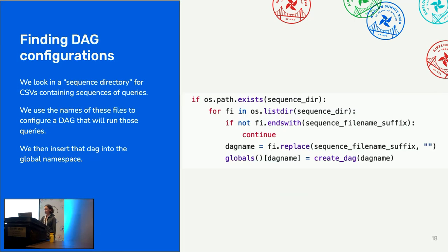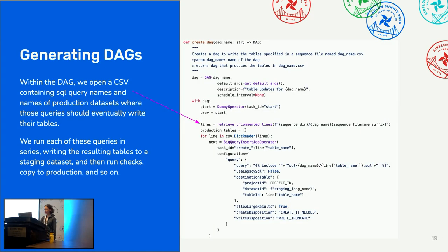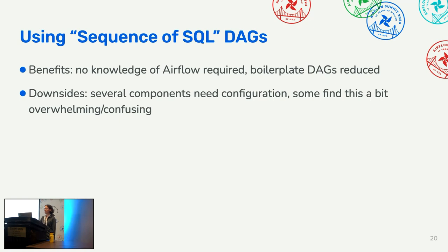In a bit more detail: we look in a sequence directory under the DAGs folder on Cloud Composer for CSVs containing query sequences, then use those filenames to configure a DAG that runs the queries in order, and insert it into the global namespace. The key part is just reading the file that specifies where the SQL queries are and running them in series. For people doing analytic support work this requires no knowledge of Airflow, and it reduces boilerplate DAGs — though it can still be a little overwhelming if users don't understand the underlying scripts.